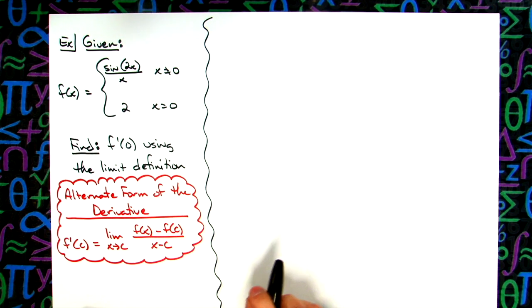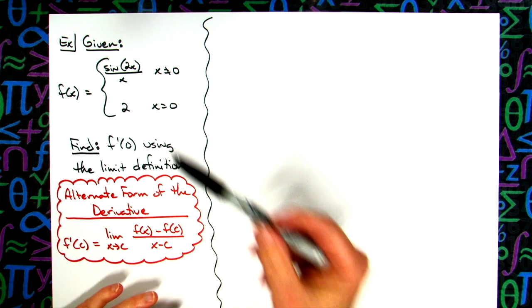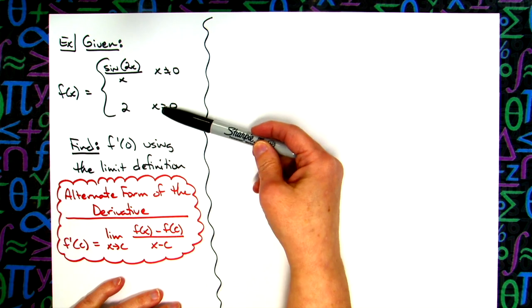In this derivative, we're going to calculate the derivative at a given point using the limit definition, and our function is going to be a piecewise function.